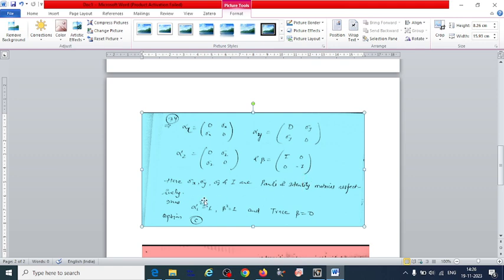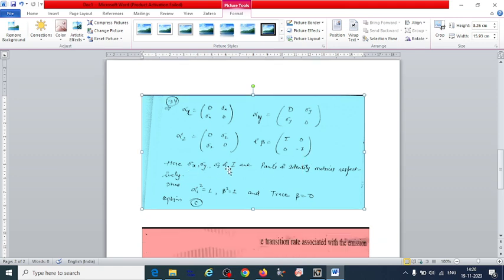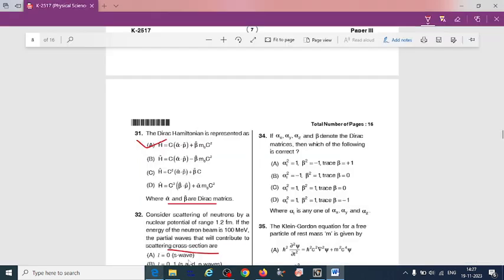If they are identity matrices, then αᵢ² = 1, β² = 1, and trace of beta if we take, that is equal to 0 because 1 minus 1 is equal to 0. So here option C is correct: αᵢ² = 1, β² = 1, and trace of β = 0.